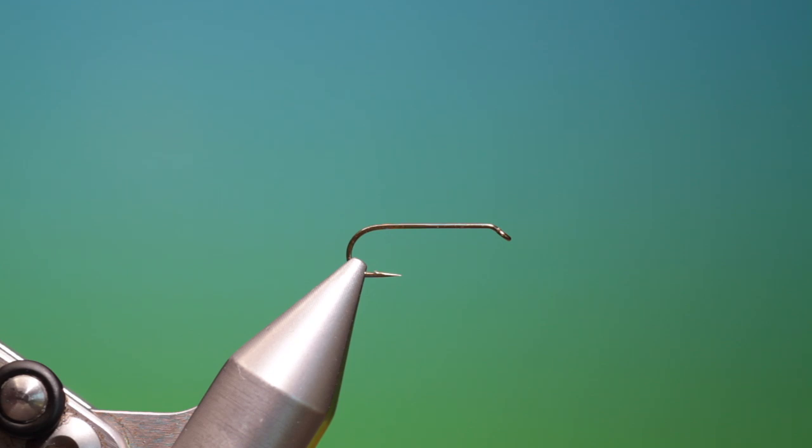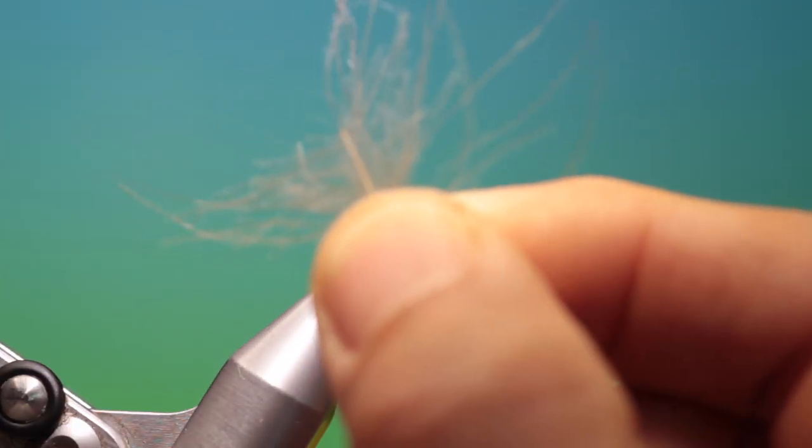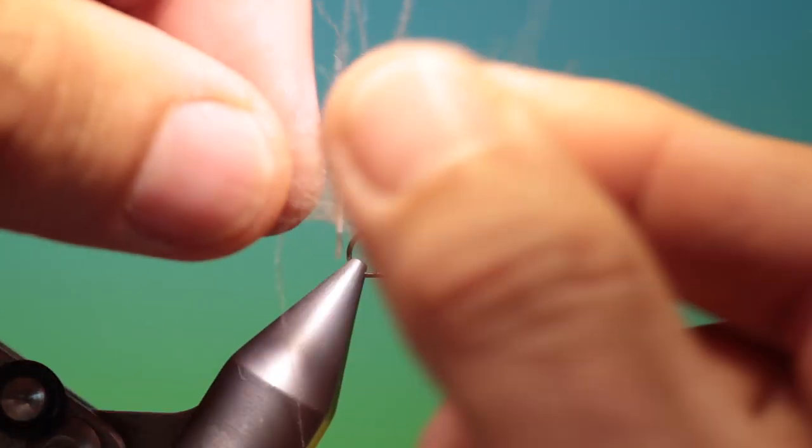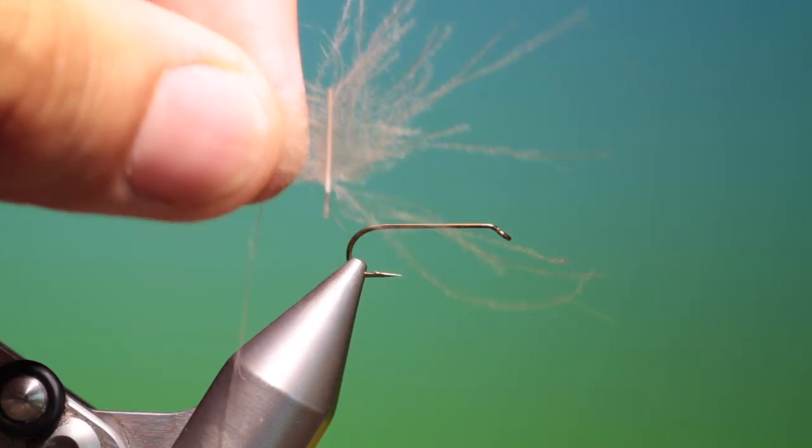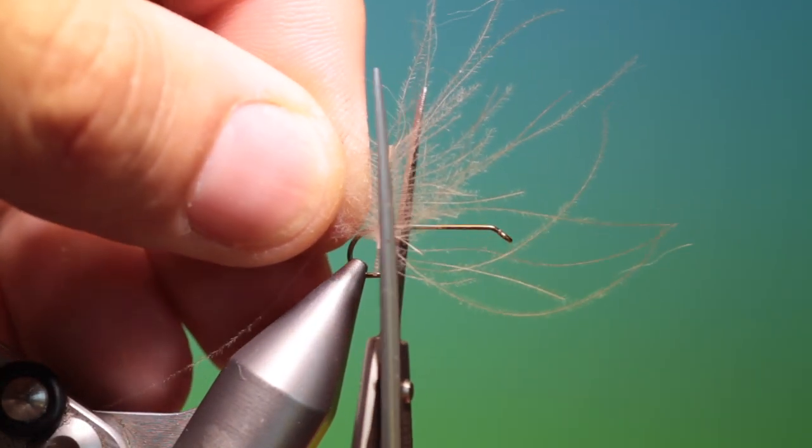We have to make the dubbing first, so this is made from CDC and hare's ear. When you're using CDC you'll get a lot of these bits that are surplus after you've used the CDC.